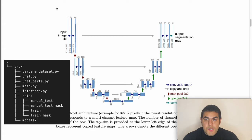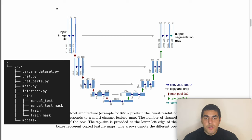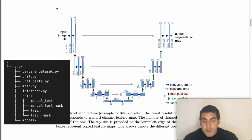The project structure will be like this: we will have a dataset file which creates a PyTorch dataset to load our data; a unet.py file containing the main U-Net architecture; a unet_parts.py file with the building block components; a main.py for training, which we will execute when everything is done; and an inference.py to load the model and get predictions like the ones shown at the start of the video.